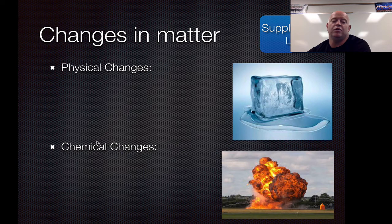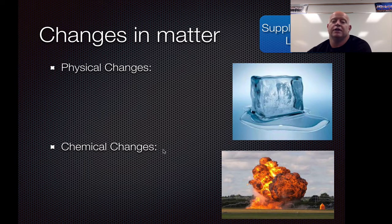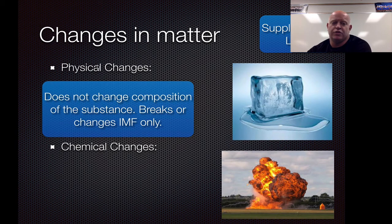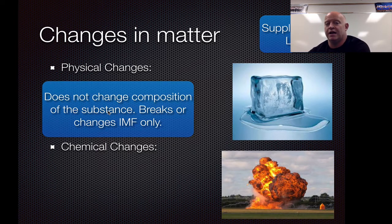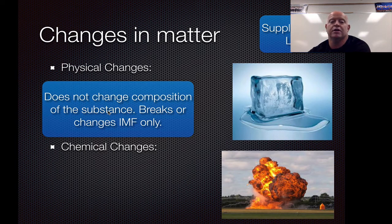Chemical changes are basically what we do when we are trying to figure out that chemical property. So we are burning it, running electricity through it, corroding it, oxidizing it — those kinds of things. When you identify a physical change, the easiest way to recognize it is that it does not change the composition of the substance. It is still the same thing — it was water before, it's water after; it's ethanol before, it's ethanol after. We can break or change intermolecular forces — that's allowed — but we can't change chemical bonds.